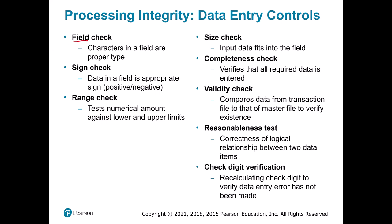Here are some input validation controls. Field checks verify that characters in a field are the proper type — for example, a gender field should only accept M or F, not a zero or question mark. Sign checks make sure data is positive or negative as appropriate, such as ensuring debits and credits are only positive numbers. Range checks enforce a lower and upper limit — for example, age might be valid from zero to 120. Size checks make sure all data fits into the field, such as a state field that only allows two characters so someone can't type 'West Virginia' in full. Completeness checks ensure all required fields are present before anything is accepted, like not accepting a street address without a city or state.